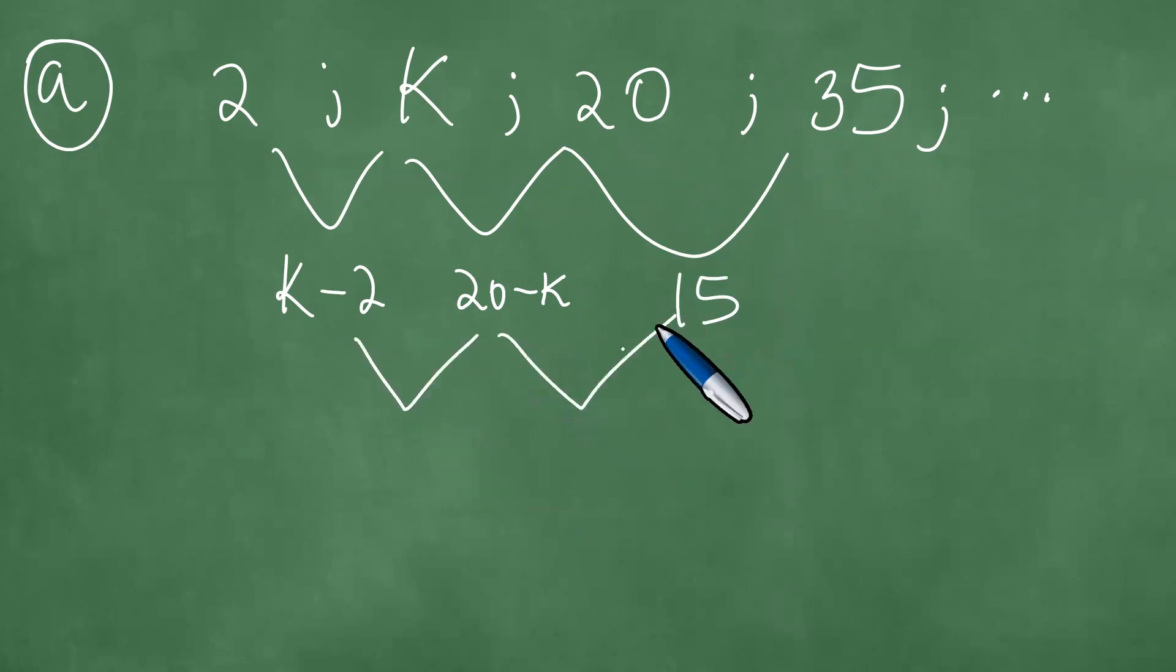Next, this term minus that term actually give 22 minus 2k. Then this minus that give us exactly k minus 5. Because this is a quadratic sequence, what we then have is that this term must be equal to this. So in other words, 22 minus 2k must be k minus 5.